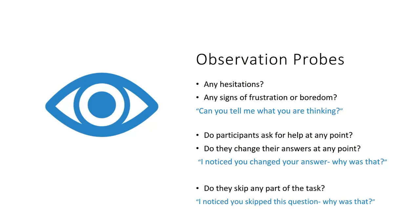An experienced interviewer can follow up on non-verbal cues with observational probes, which encourage participants to verbalise their thought processes. For example, if an interviewer observes someone hesitating or eye-rolling, they can ask, 'Can you tell me more about what you are thinking about now?' If a participant changes an answer, the interviewer can ask, 'I notice you changed your answer — what was that?' If a participant accesses a help screen or goes back to an earlier section, the interviewer can ask, 'What are you looking for now? Can you find the information you are looking for?' If participants skip a question, interviewers can ask, 'Why did you miss out that particular question?'